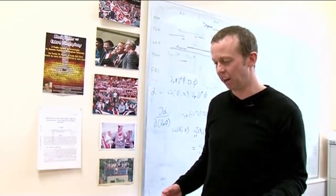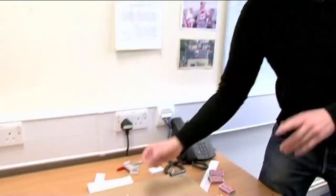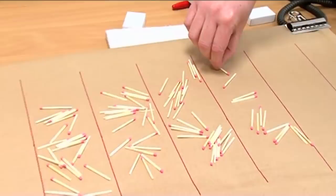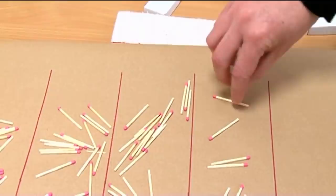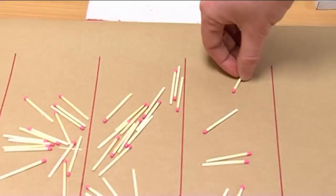The reason you get pi out of this is it's all to do with the angle that the match takes as being sort of playing some role here. If you're working in radians, if you go through a full 360 degrees, when in radians, that's 2 pi. So that's where pi is coming into this game, and that's why you can get pi out of this sort of setup because of the angle.